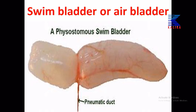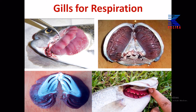Let's see the swim bladder — it's like a balloon filled with air and has a small duct called the pneumatic duct, which goes directly from the lungs into the swim bladder to fill it with air. When the air fills it, the fish becomes lighter. The gills absorb the air dissolved in water so that respiration in water is possible. Respiration with the help of gills is called branchial respiration.